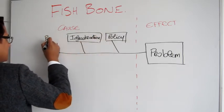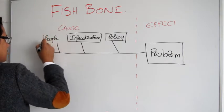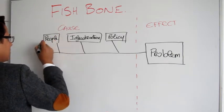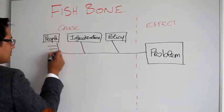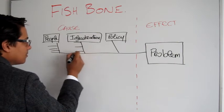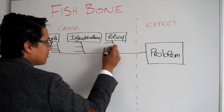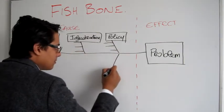And then, for each themed bone, try and identify the possible causes, such as a systems failure, too many approvals in the process, etc.